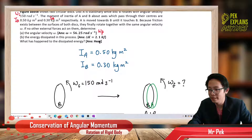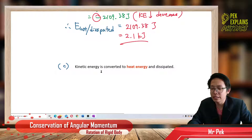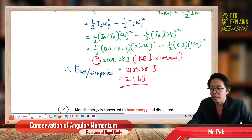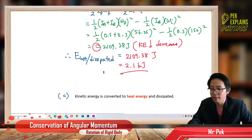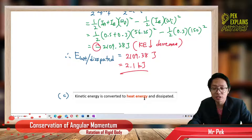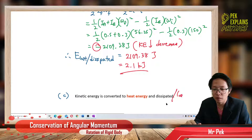The dissipated energy became heat energy. The kinetic energy decreased because it was converted to heat energy and lost.